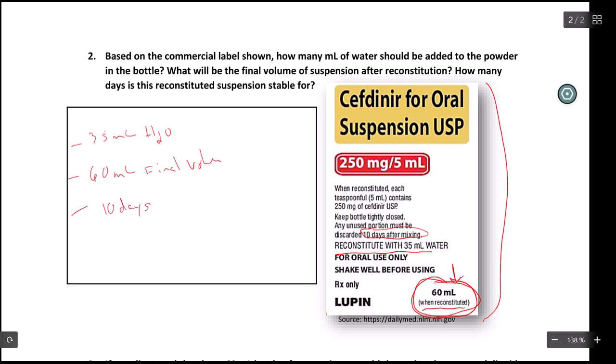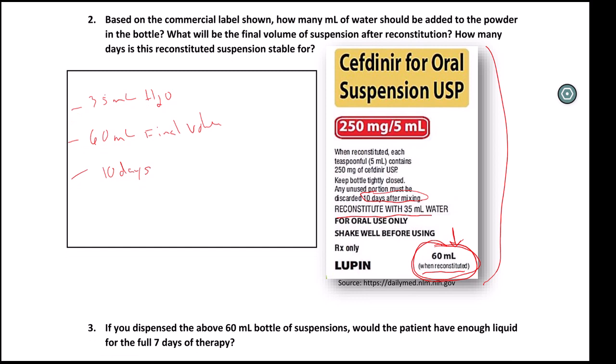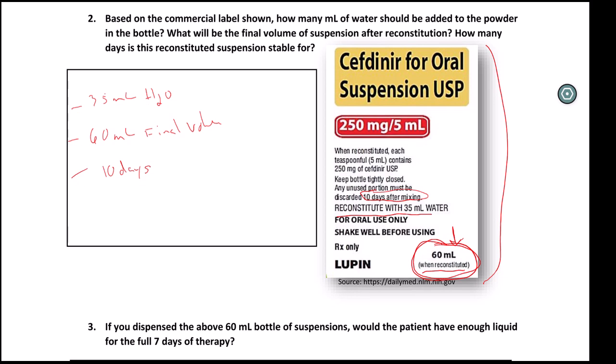And the date after which the suspension is no longer giving the 250 mg for 5 mLs is 10 days. We usually call this a beyond use date. Beyond use date means the date after which a commercial product has been made and is no longer going to be giving the right dose. In other words, the effectiveness of that 250 per 5 could be lower than what it is.